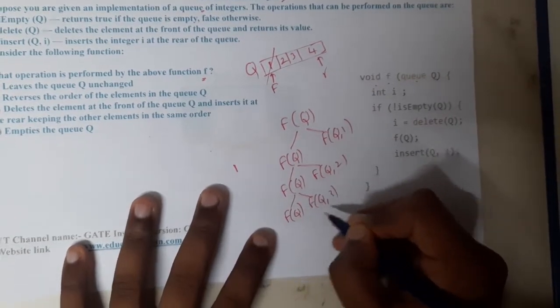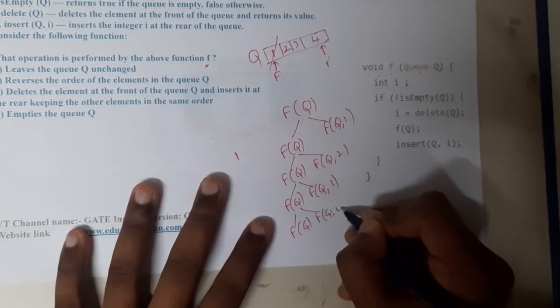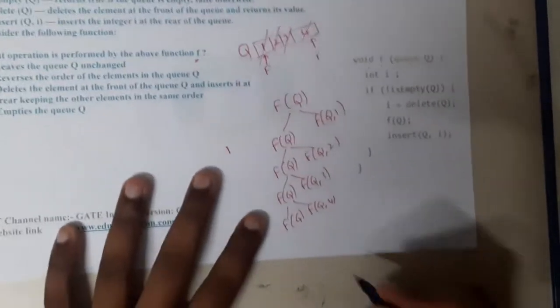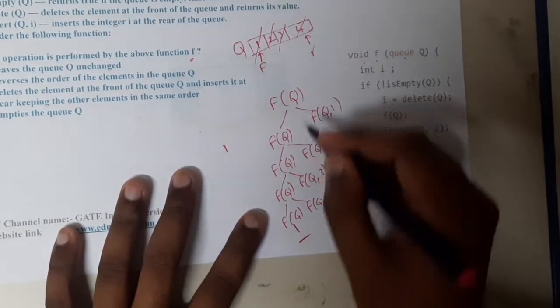Similarly F of Q, it will ask you to insert the third element. F of Q, the fourth element. So now all elements are out, so now what it will say? It is empty, means it will come out.